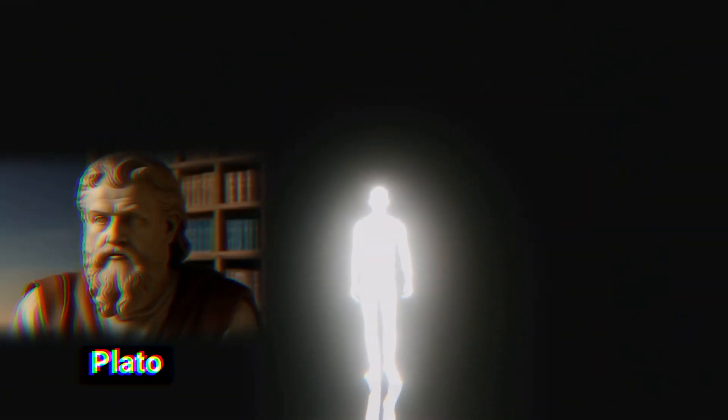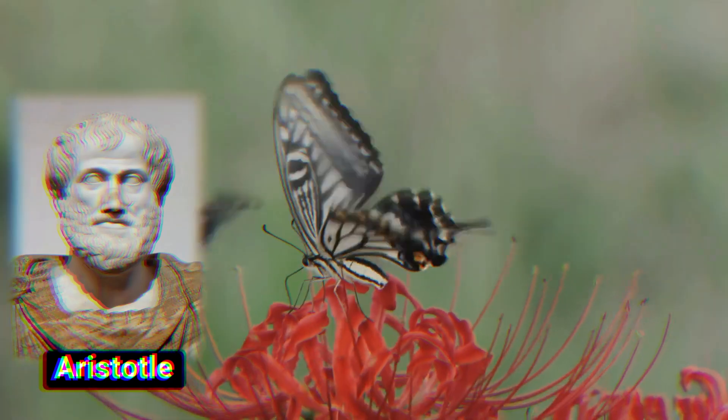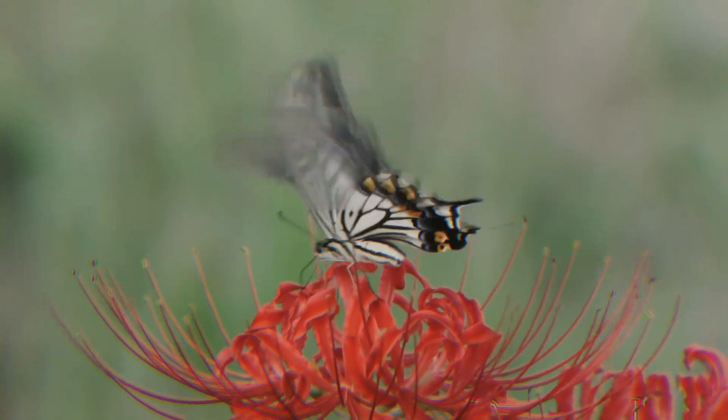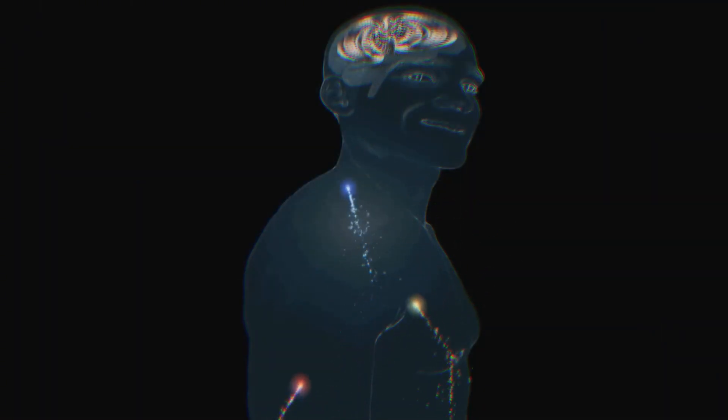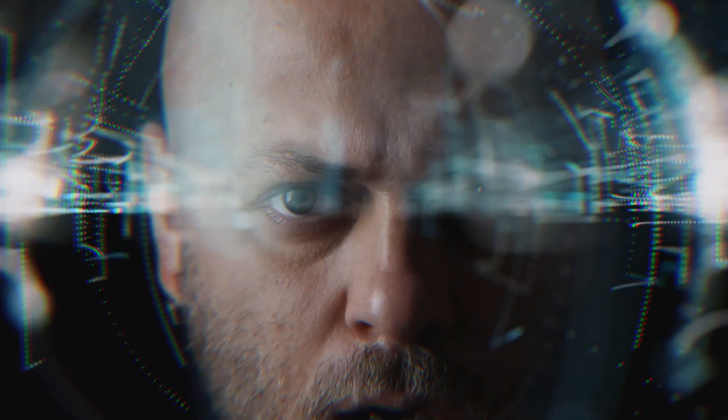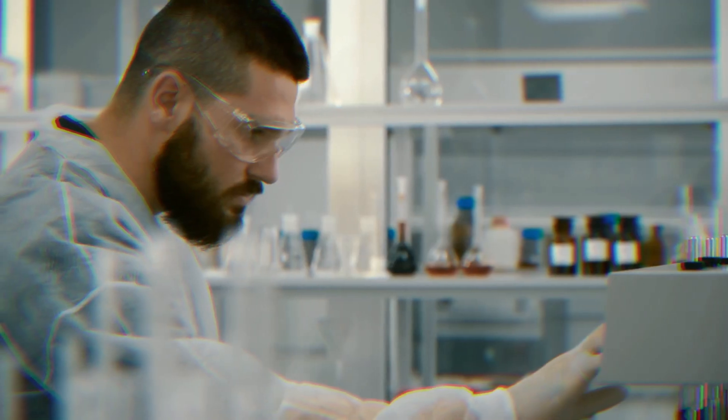Plato defined the soul as the immortal and pure part of a person that existed before the body. Aristotle, on the other hand, saw it as the vital principle of any living being. Put more simply, the body would be the vehicle, the avatar, very similar to that of a video game, that automatically performs biological processes, and the soul would be the part that commands the body, that supposed avatar, the part that feels and is conscious at all times.